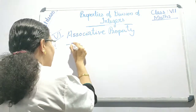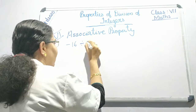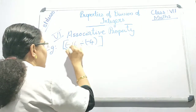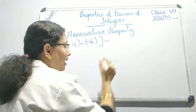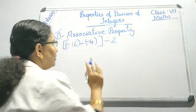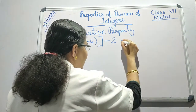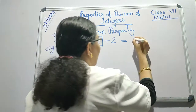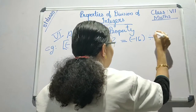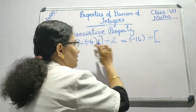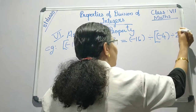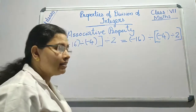I am taking a number: minus 16 divided by minus 4, the whole divided by 2. And if it is associative, then it should be equal to minus 16 divided by, the second term, minus 4 divided by 2.